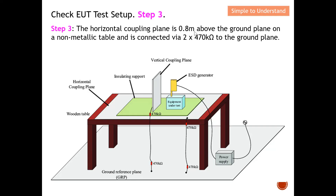Step number three: the horizontal coupling plate must be 0.8 meters above the ground, placed on a non-metallic table, and connected via two 470 kilo-ohm bleeding resistors to the ground plane. As shown, the wooden table needs to be 0.8 meters tall. The two bleeding resistors connect the horizontal coupling plane to the ground reference plane.